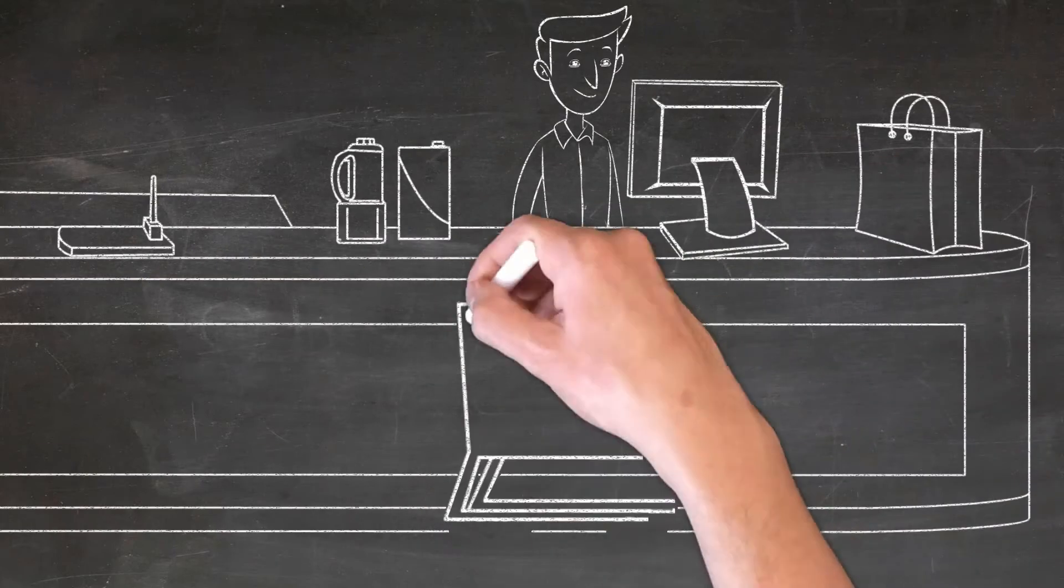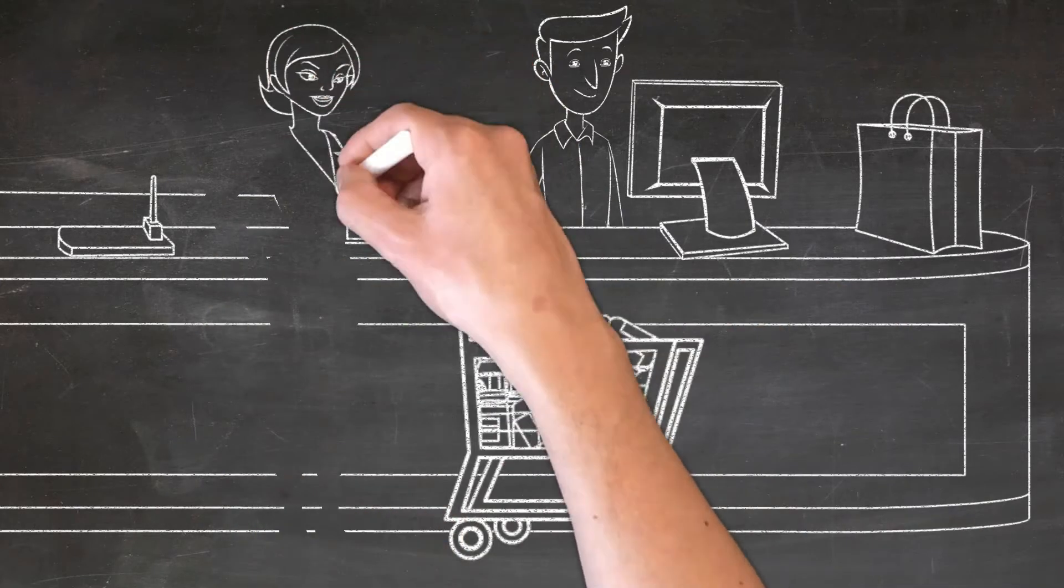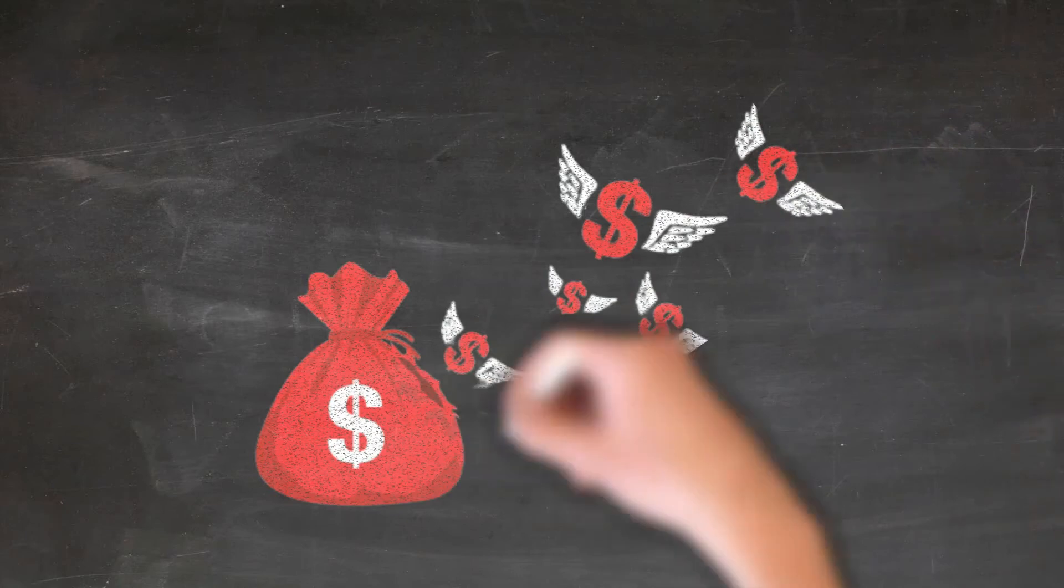Oftentimes, we buy something because we get this impulsive want-now urge and drop it into our cart or press checkout online. Sabatier reminds us to think about the true cost of a purchase and that there is a trade-off every time.